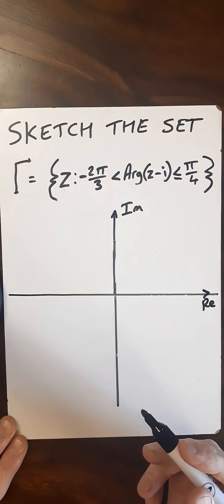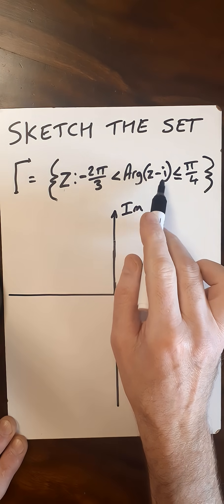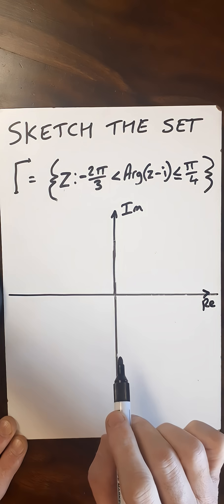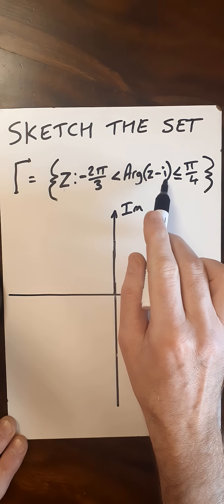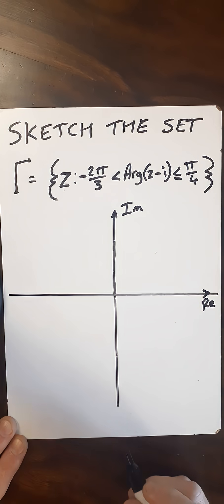So first of all, let's find our central point. The central point is going to be at z minus i, wherever that will be defined on the axes. As i is the imaginary axis, it's going to be shifted up one unit here on the imaginary.